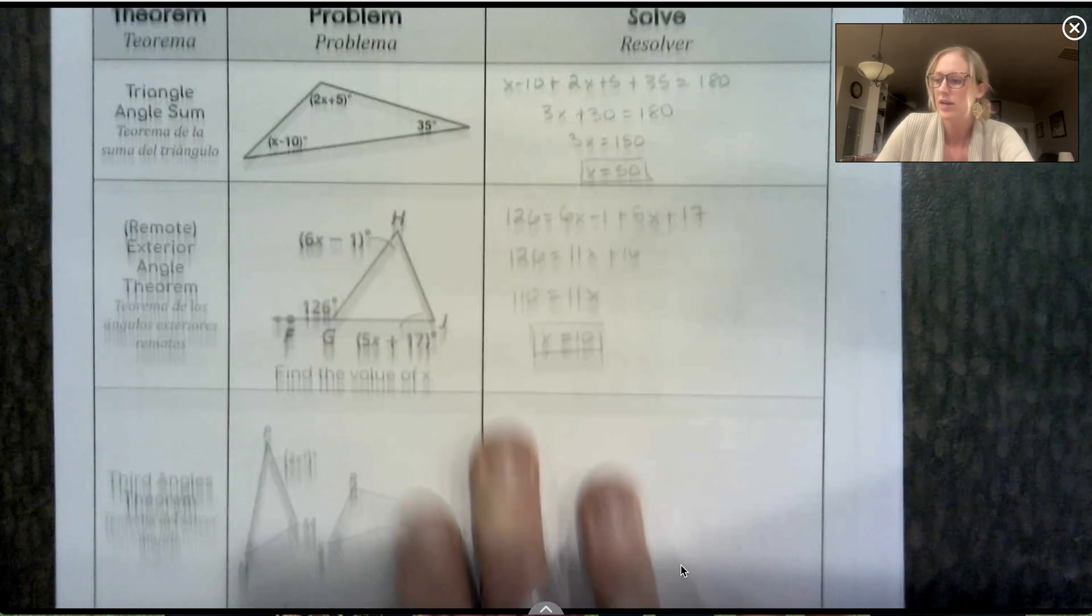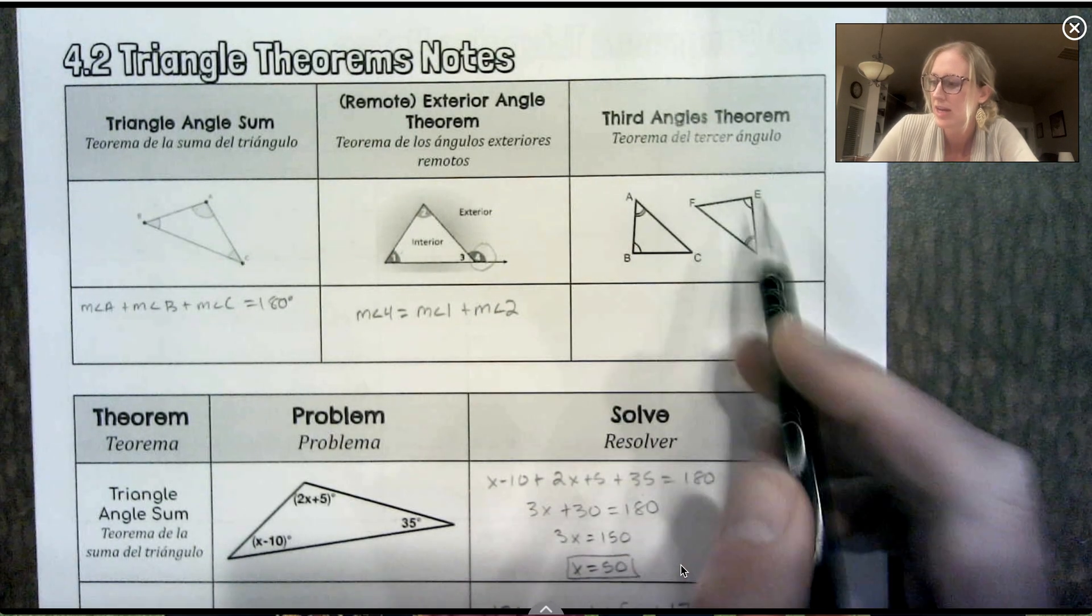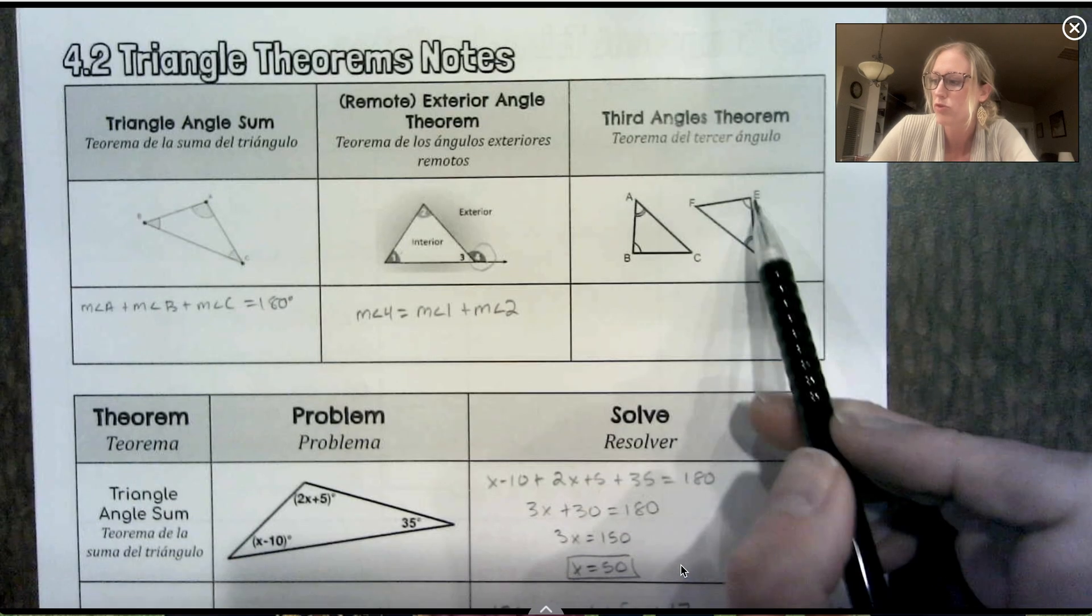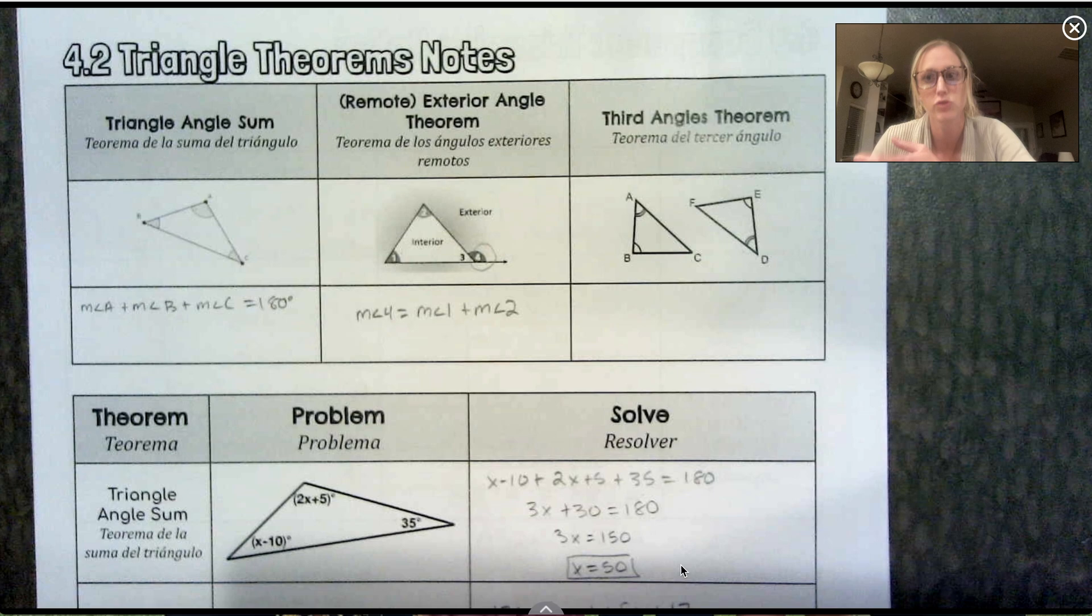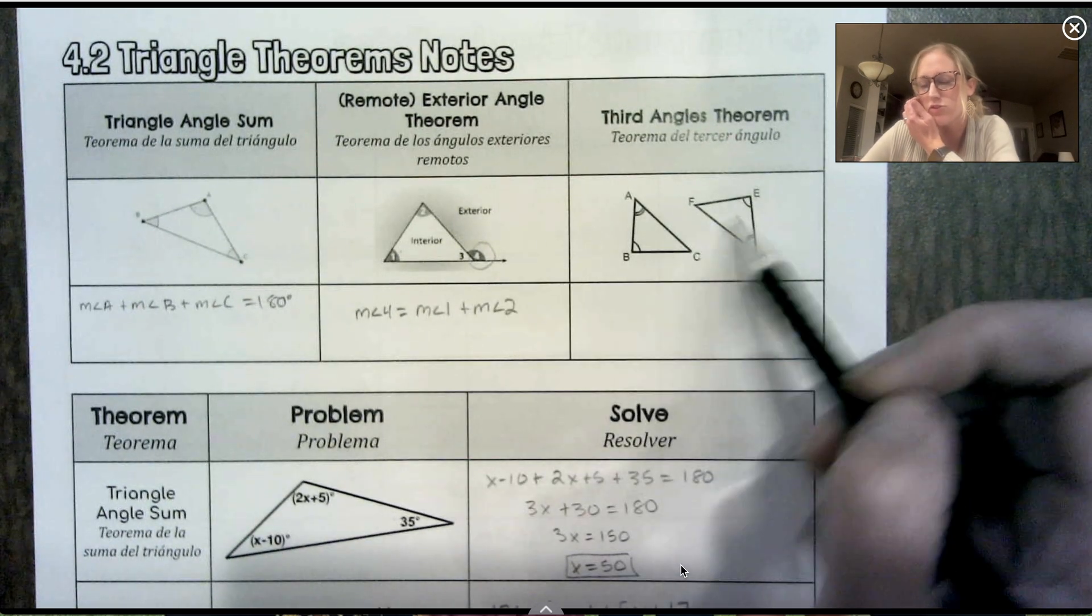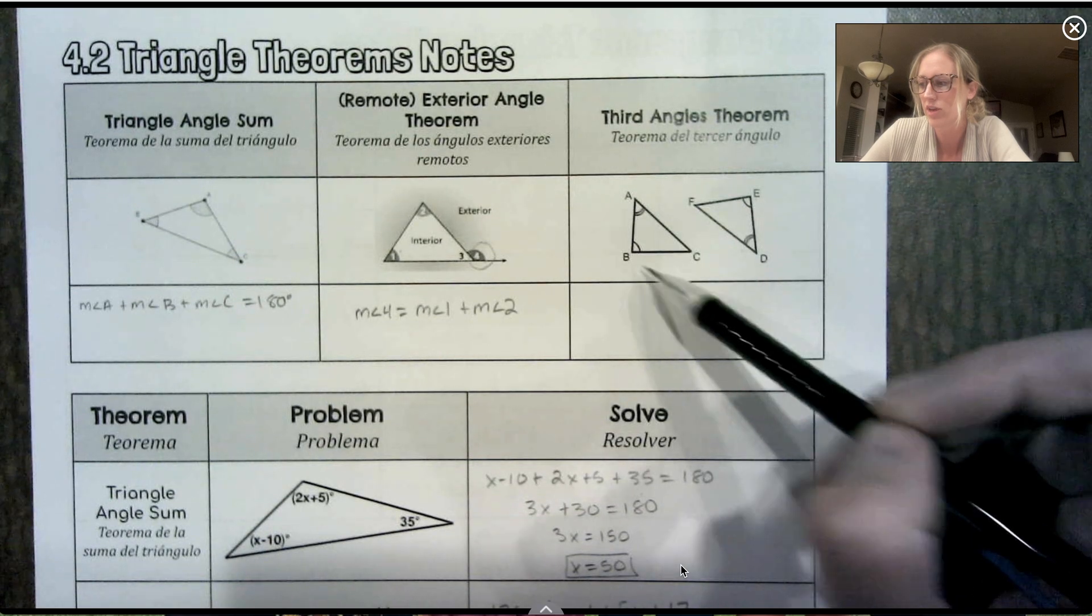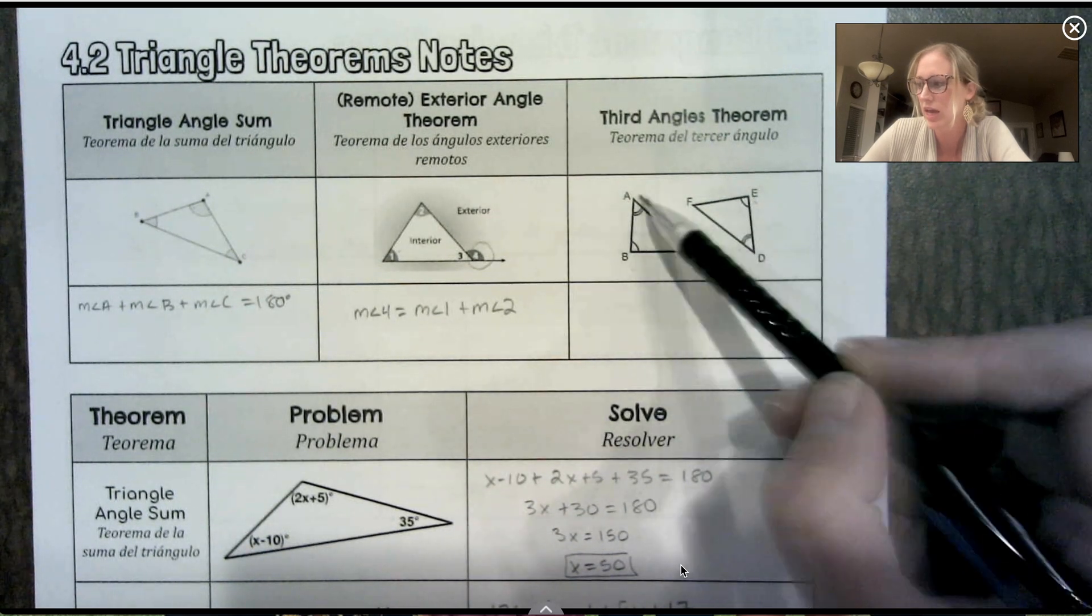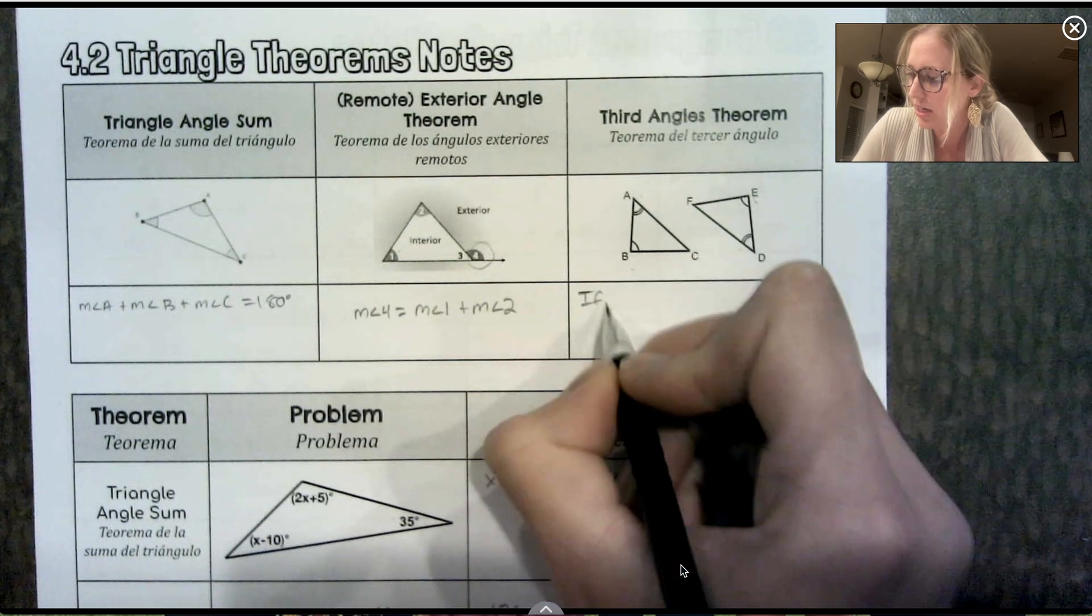All right. Third angles theorem, our last theorem regarding triangles. This theorem deals with two separate triangles. So if I have two different triangles and I know that two pairs of angles are congruent, in this case B and E are congruent and A and D are congruent, I'm going to use this picture to set it up.